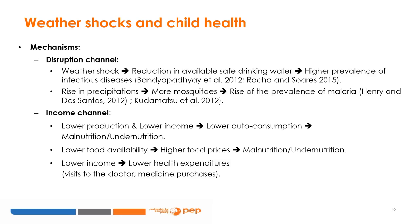In areas where malaria is endemic, an important rise in precipitation can lead to more mosquitoes, increasing the prevalence of malaria, as observed by Kudematsu and co-authors, 2012, in sub-Saharan Africa. Similarly, Henry and Dos Santos, 2012, show that a deficit in rainfall lowers the risk of malaria-related deaths for children younger than five years old in Burkina Faso and Mali.